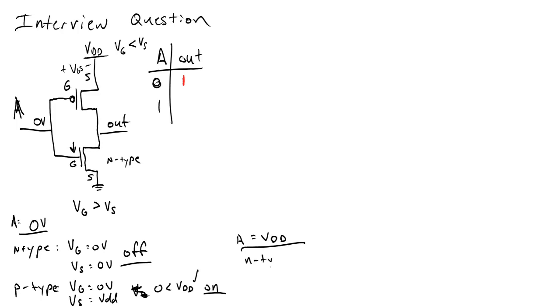So, on the N-type, VG is equal to VDD, which is one, or just on. VS is equal to zero volts, again, because it's connected to ground. So, is VDD greater than zero, or VG greater than VS? Yup. So, the N-type is going to be on.